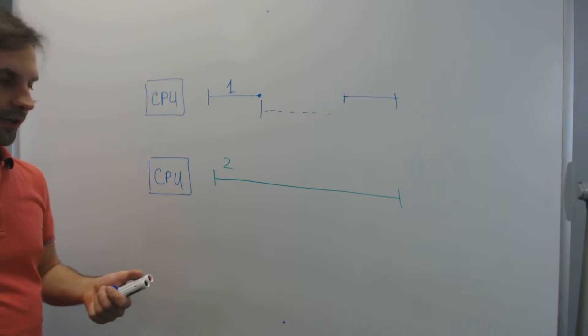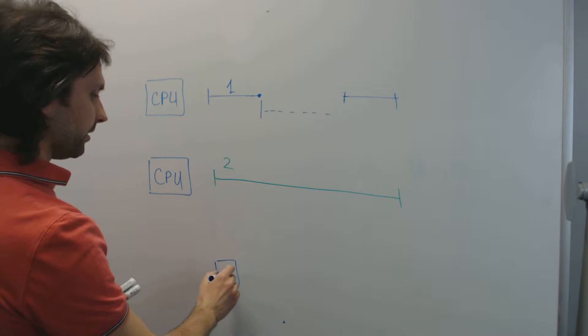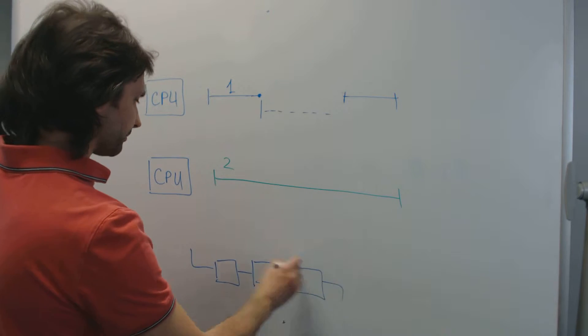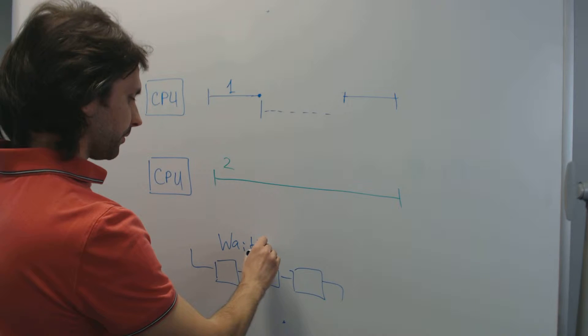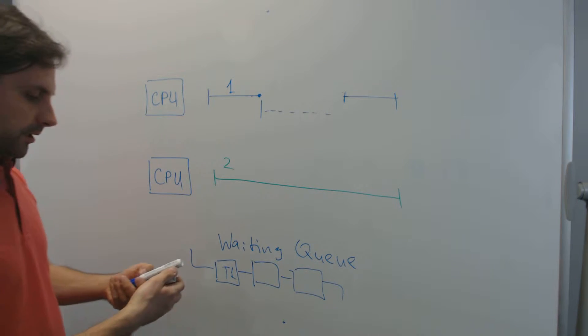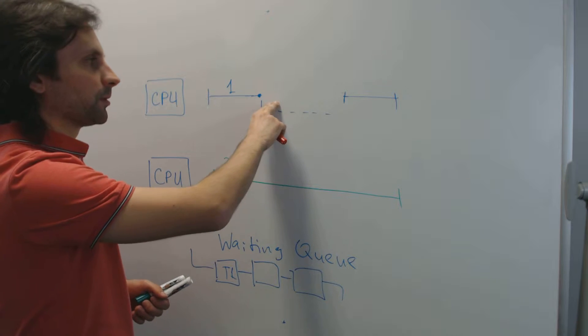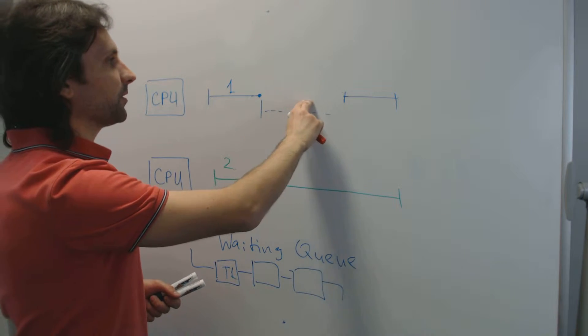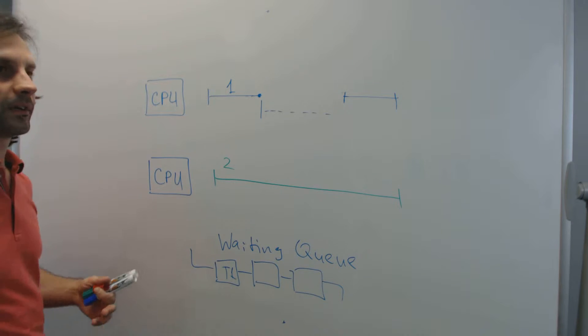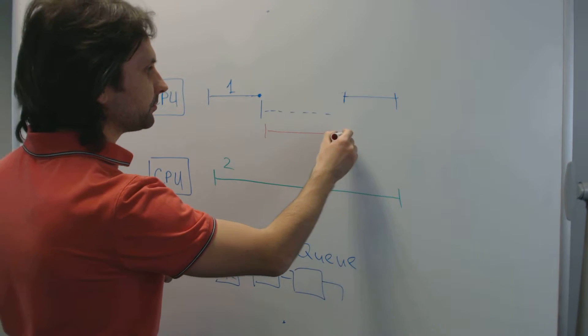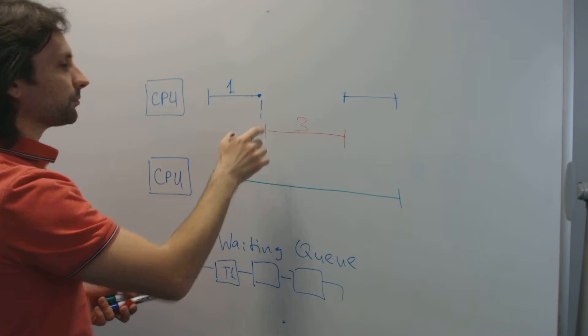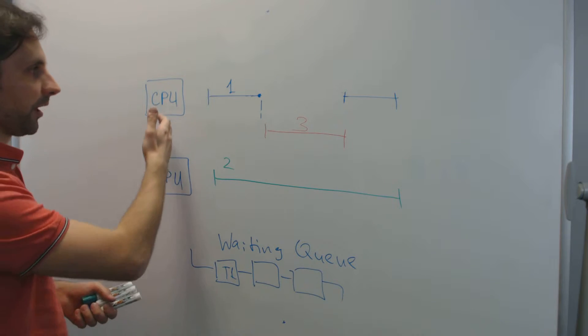And what actually happens is that the thread is put in a waiting queue. Somewhere in the operating system area there will be a waiting queue and our thread will be added to that queue. Well, at this moment when the thread is blocked and not doing anything, we have the CPU that is available for doing something else. So at this moment if we come up with the third thread, we can fill this gap. We can utilize the CPU in a more efficient way.